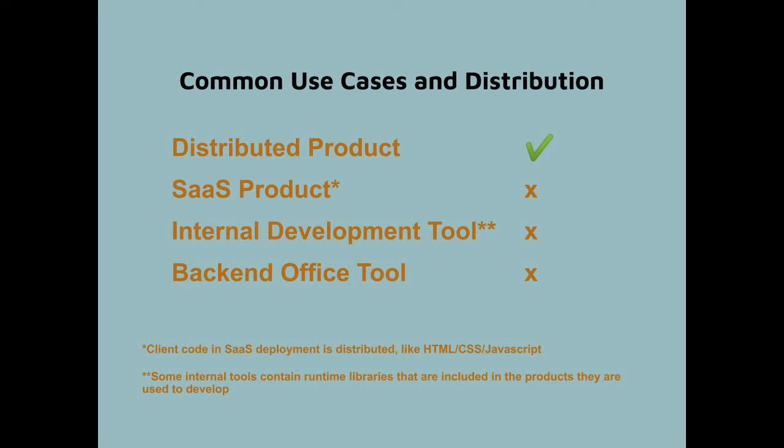For decades, companies have based their compliance processes on the assumption that the highest levels of compliance effort are directed to distributed software. This assumption means that the company can avoid a lot of process for most of the open source software it uses. But AGPL breaks the paradigm — using AGPL code requires additional compliance efforts. Companies now have to look at whether they have modified software and are making it available over a network, not merely whether they have distributed it.